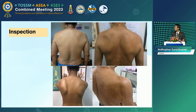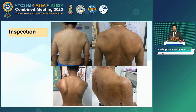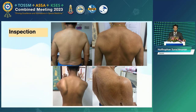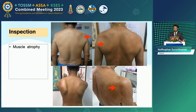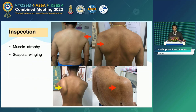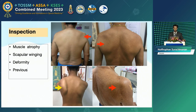For the shoulder exam, we need to expose the shoulder, assemble the undershirt in men, looking at the shoulder girdle in the outward direction, to look at the bulk of the muscle, whether scapular winging has occurred, any deformity, and all previous scars.